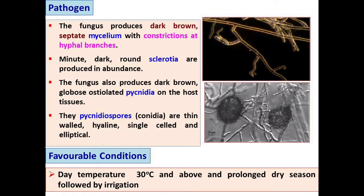This fungal pathogen produces dark brown septate mycelium with constrictions at hyphal branches, and minor dark round sclerotia are also produced in abundant quantities in soil, serving as a source of infection. This fungus also produces dark brown globose ostiolate pycnidia; within the pycnidia, spores develop and burst from the ostiole to cause infection to healthy crops. These pycnidial spores are thin-walled, hyaline, single-celled, and elliptical.